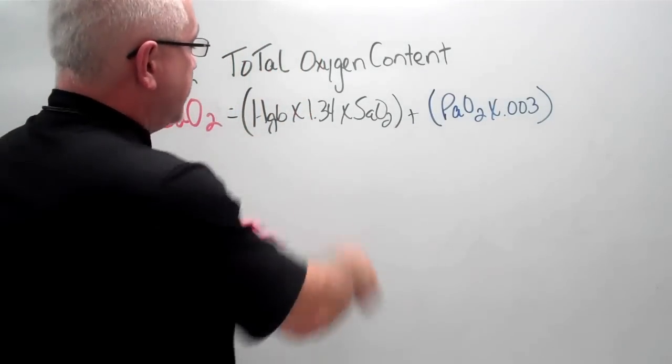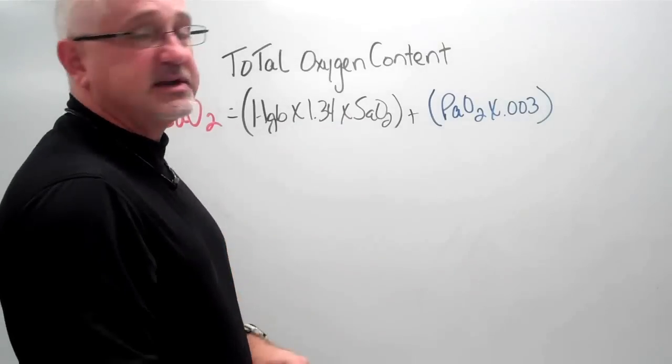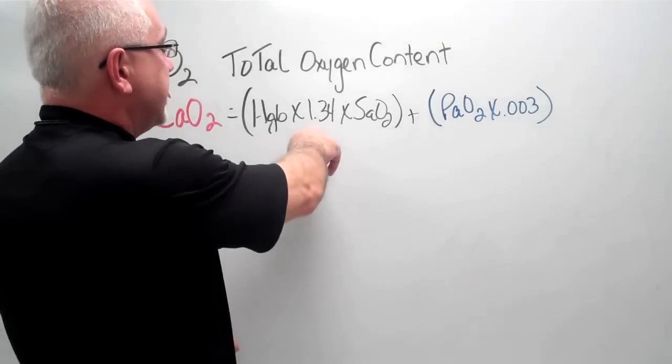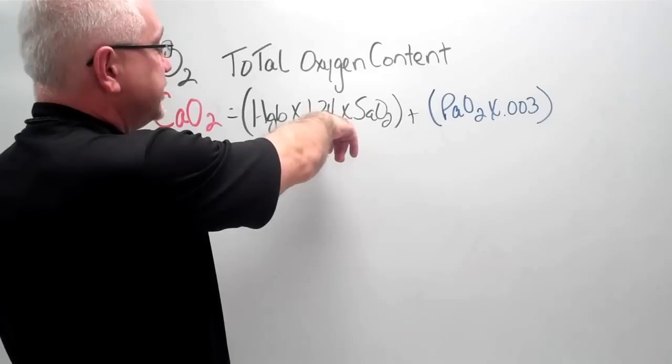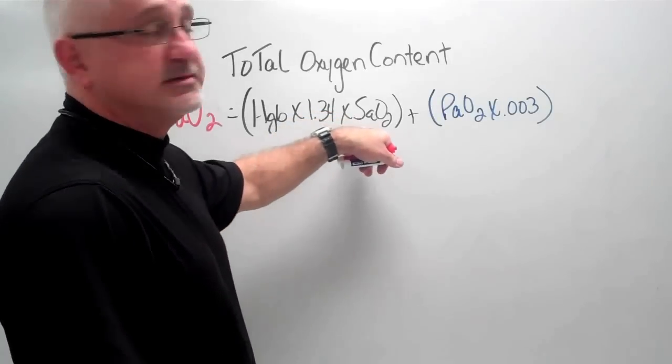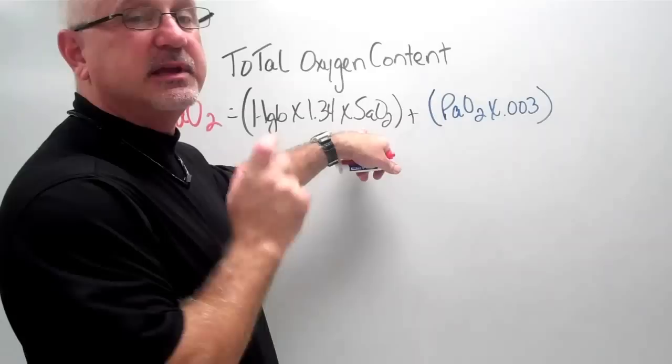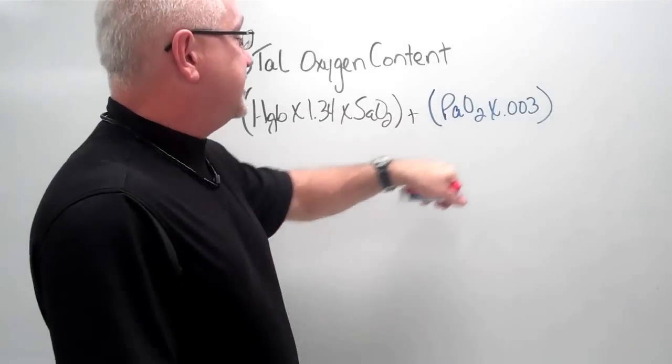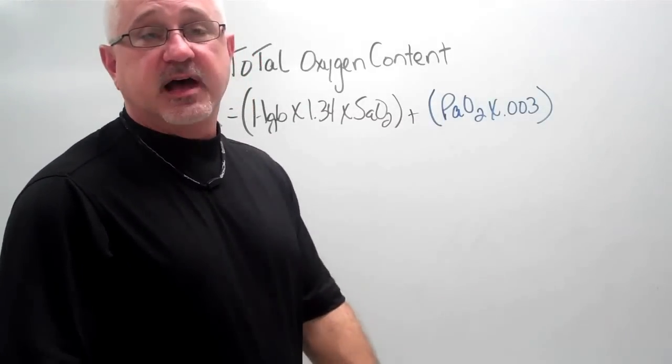We look at our formula, we got hemoglobin times 1.34 times our saturation. Each hemoglobin molecule is able to carry about 1.34 grams of oxygen times the saturation of the actual hemoglobin molecule. And then the second part is what is dissolved in the plasma.